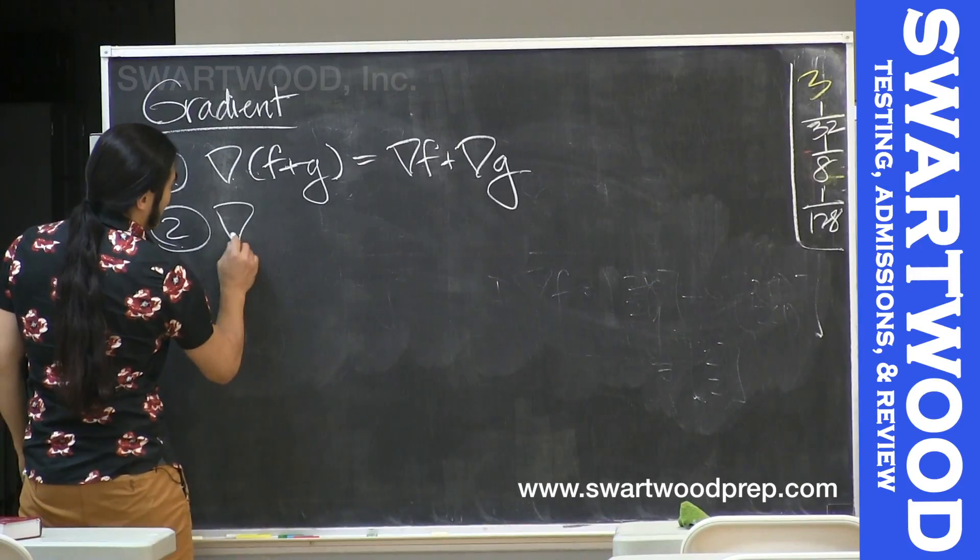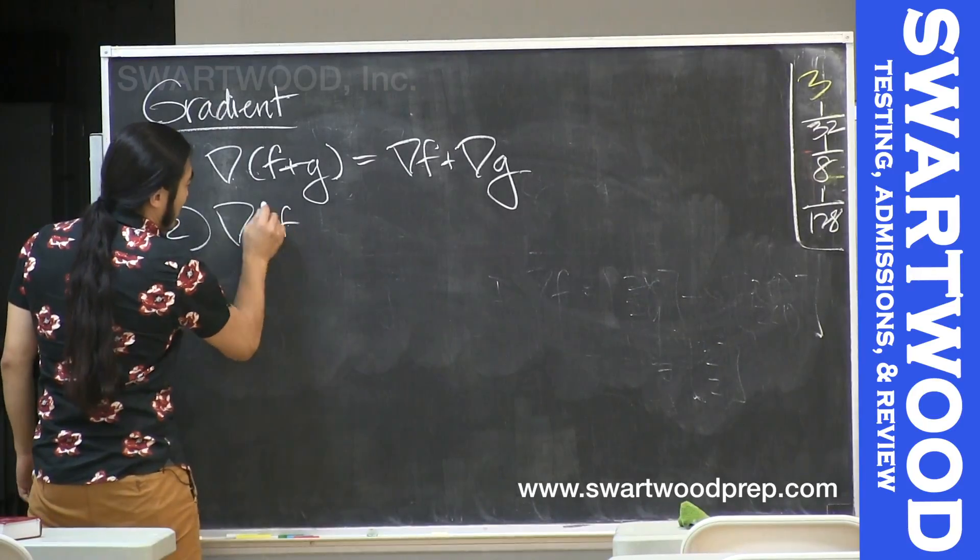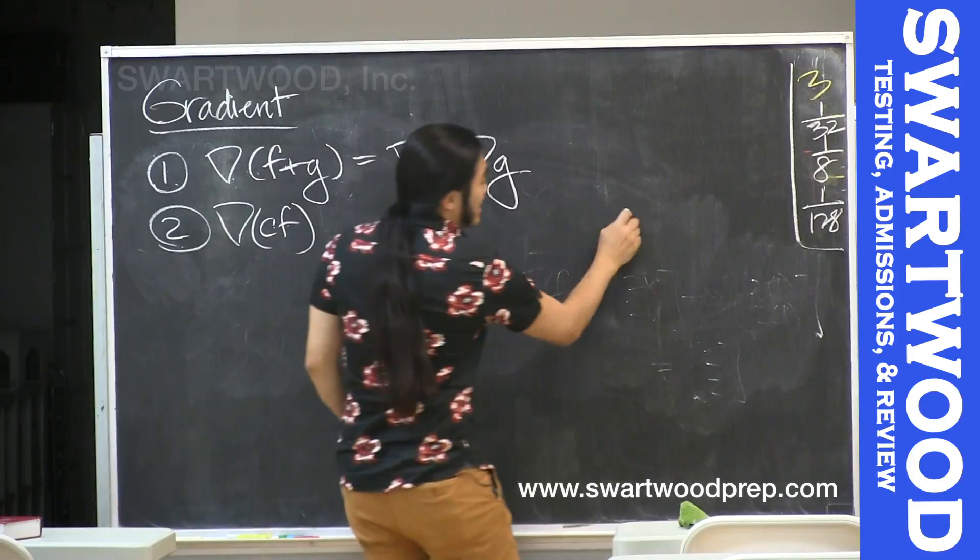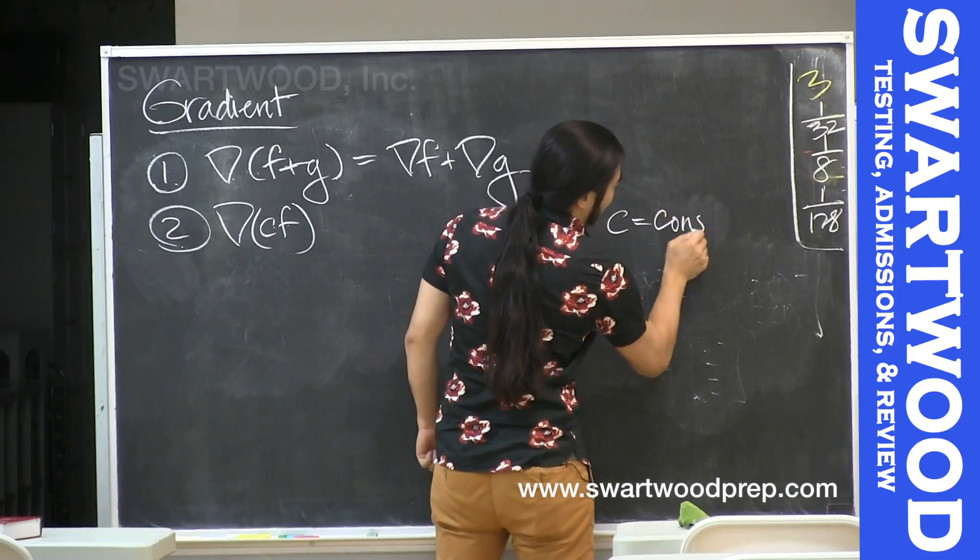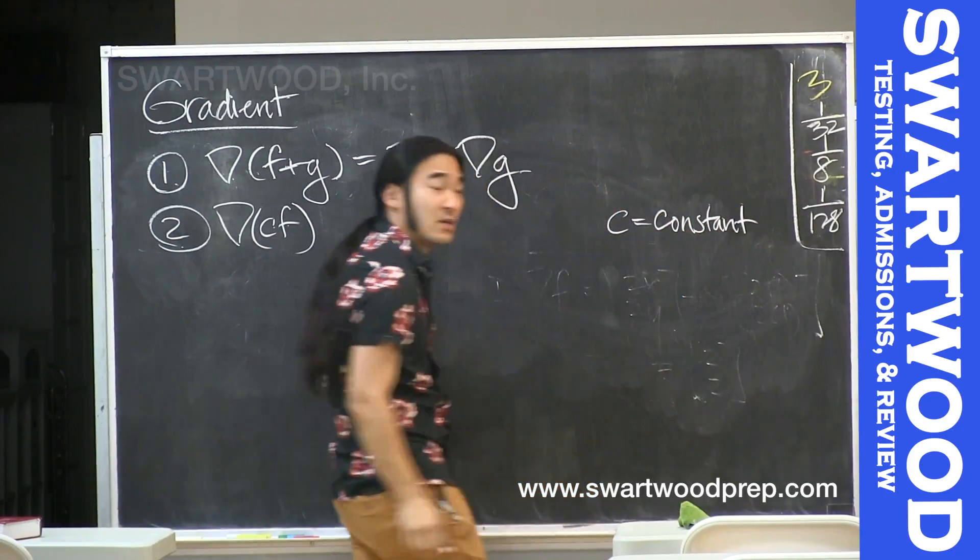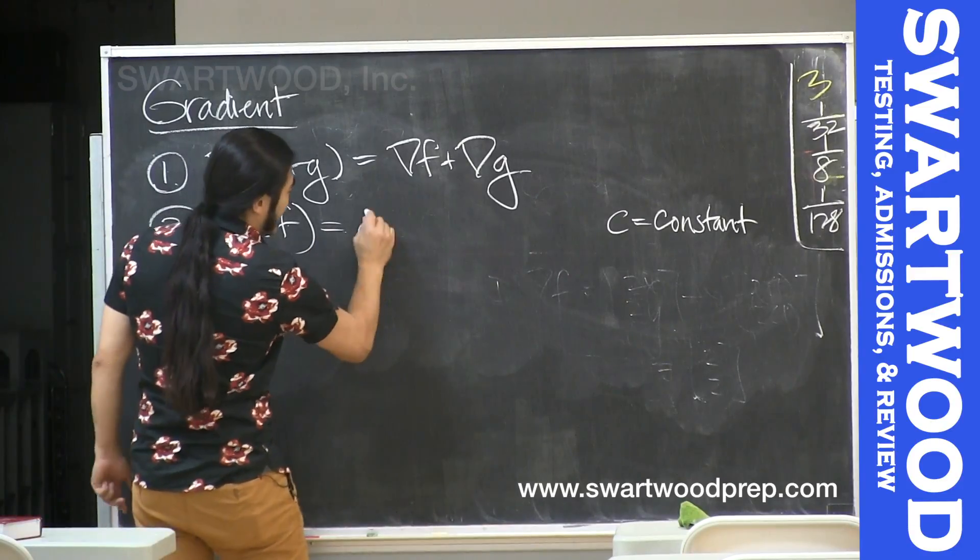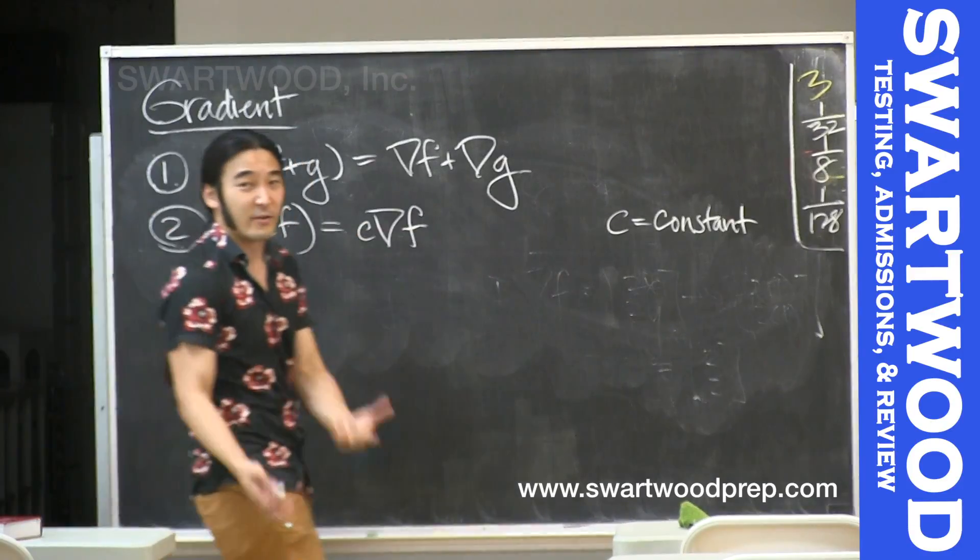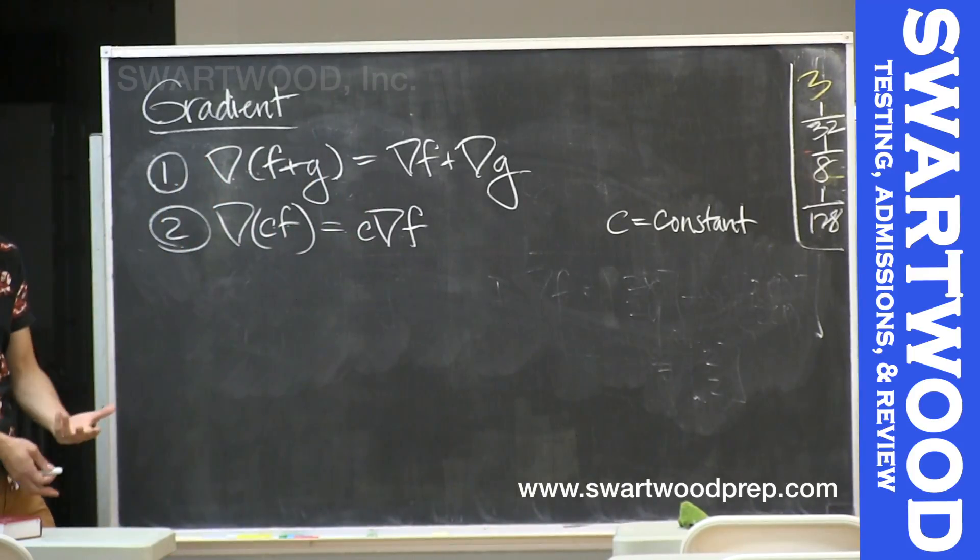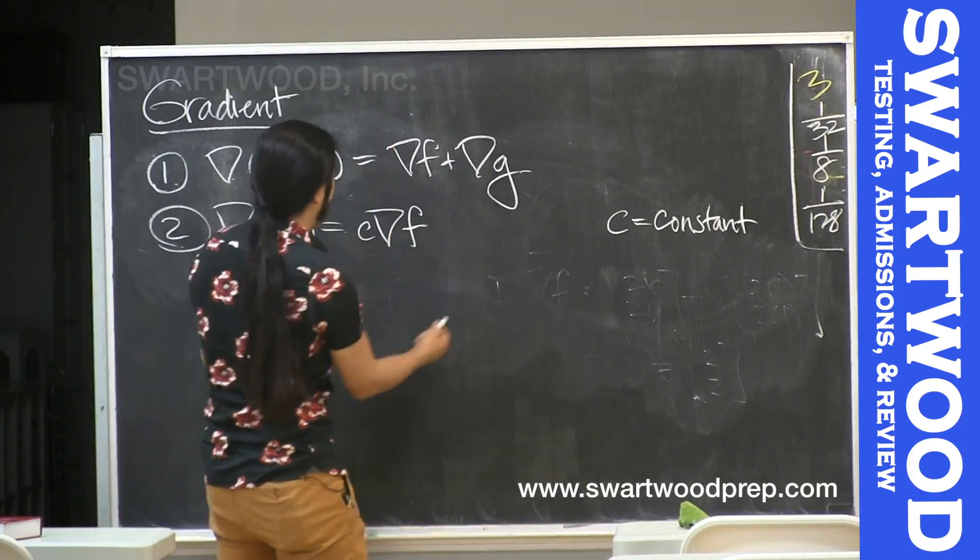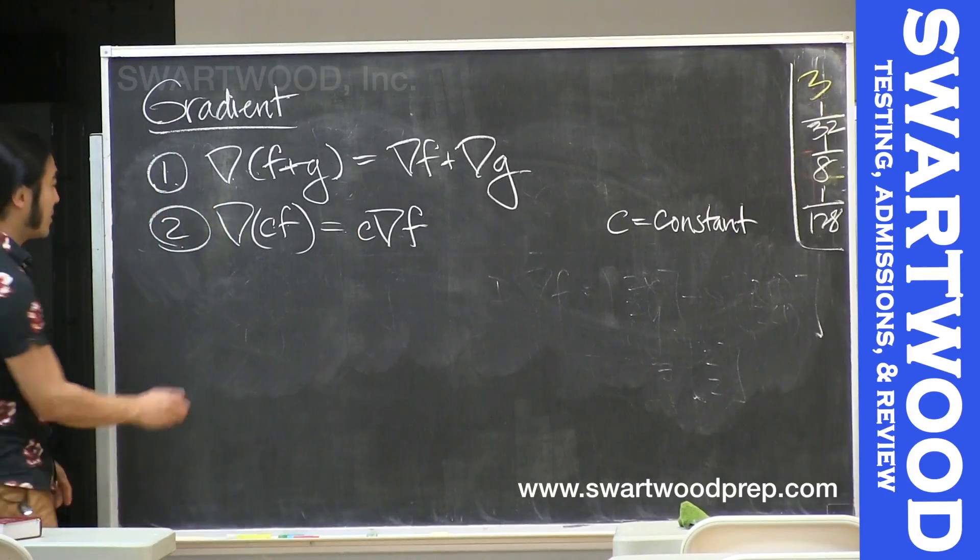The other one is, if you want, say, cf, and I want to make special note of this, c is a constant, so it's a fixed given number. Then the gradient of cf is c times the gradient of f. And for those of you that like linear algebra, this thing is showing you that the gradient guy is basically a linear operator, because it works on sums and it works on multiplication by scalars.